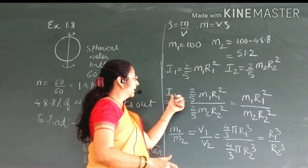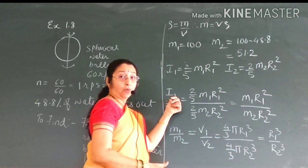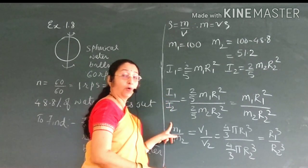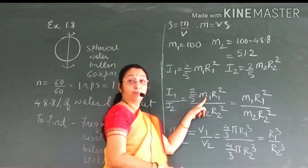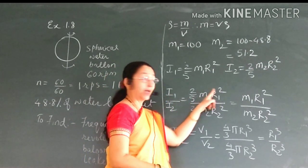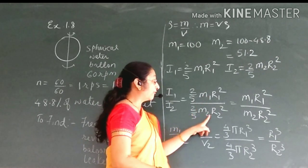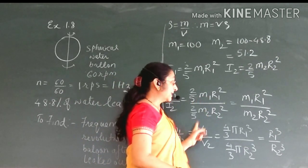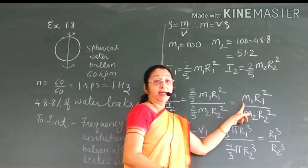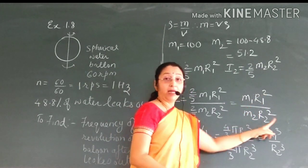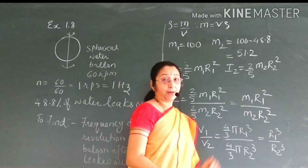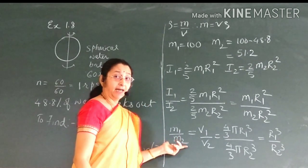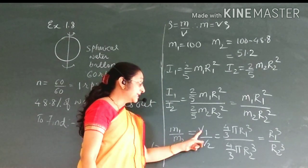Now, the ratio of the moment of inertia I1 upon I2 will be (2/5 m1 r1²) upon (2/5 m2 r2²). Canceling the (2/5) terms, we get m1 r1 squared upon m2 r2 squared.